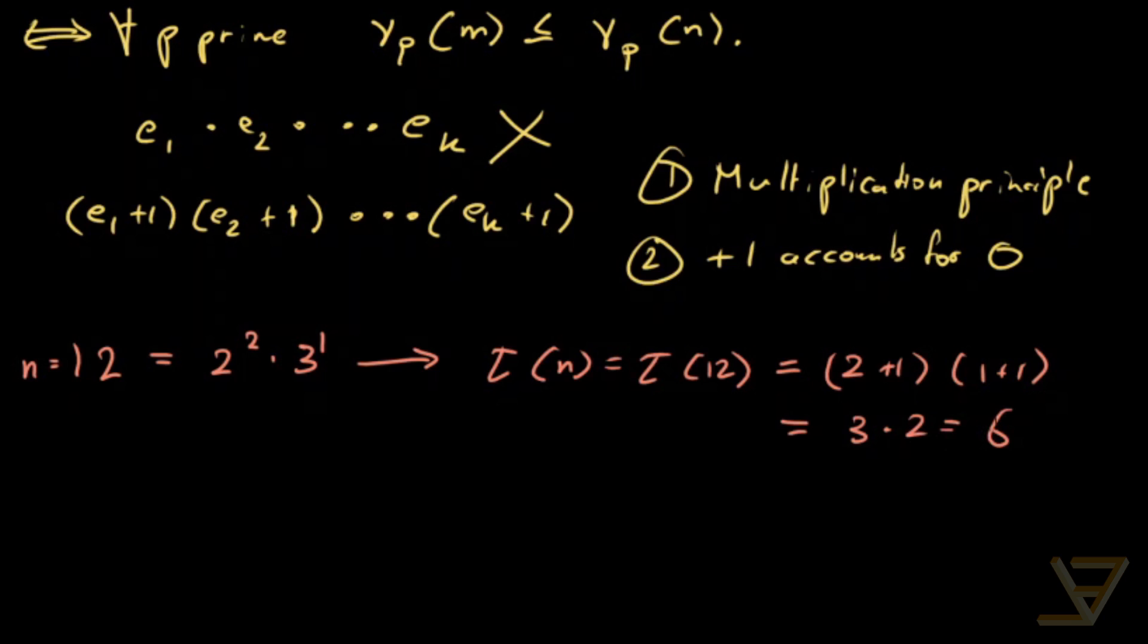So let's check that there are in fact 6 positive divisors. They are 1, 2, 3, 4, 6, and 12. So yeah, it works. And you can check that none of the other integers less than or equal to 12 are actually divisors. So there are exactly 6 divisors.